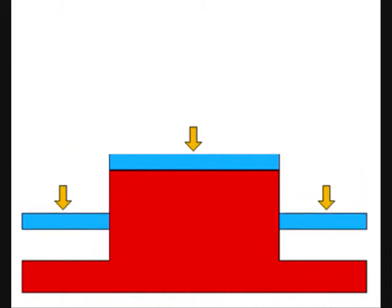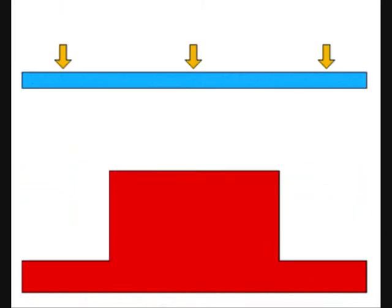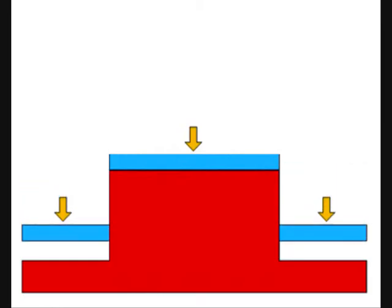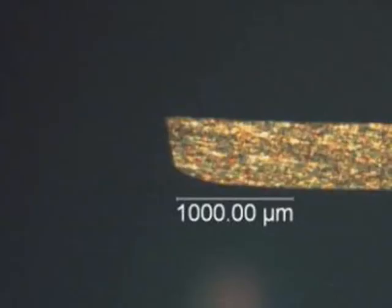For shearing using electromagnetic forming, the shearing occurs due to the acceleration of the blank past the tool, which is shown here. Since the impact occurs at such a high velocity, there is a very clean cut with almost no burr.